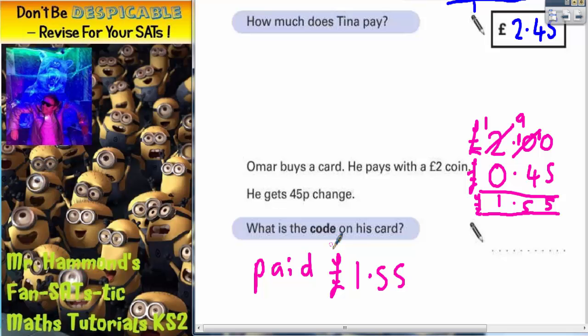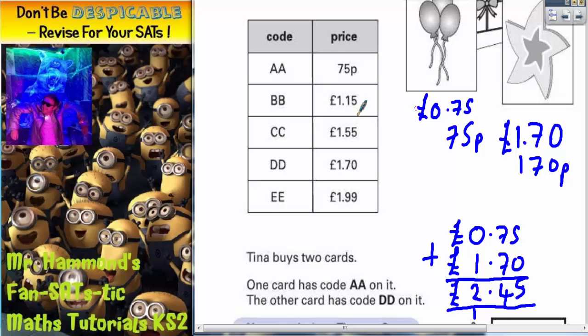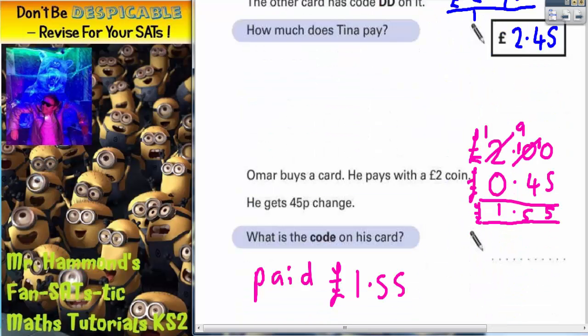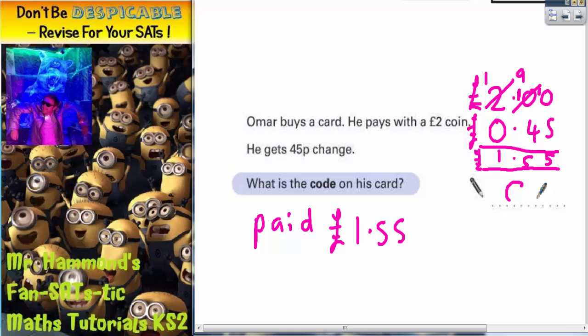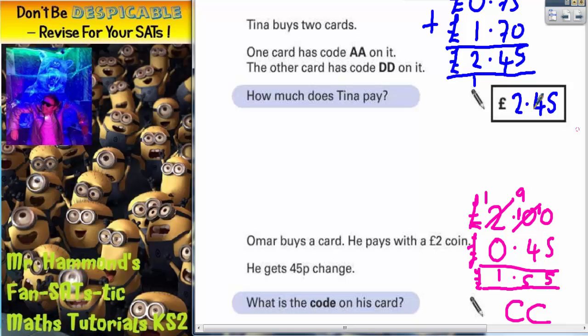So the question is, what is the code on the card that matches £1.55 that he paid? Quick look up at the price list. £1.55 is this one here. So the code on his card must have been CC. So CC is what we need to write on the answer line. And there's your two answers. £2.45 is what Tina paid, and CC is the code on his card.